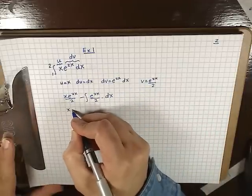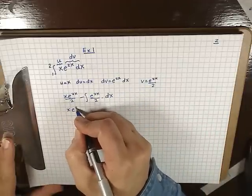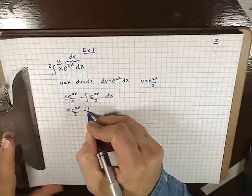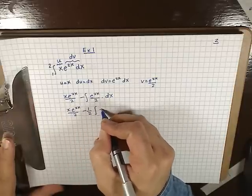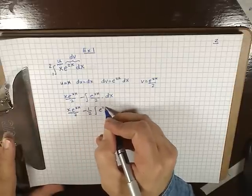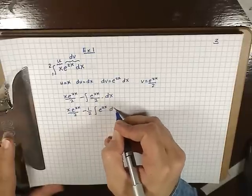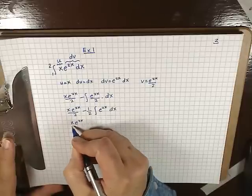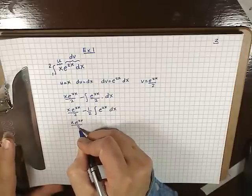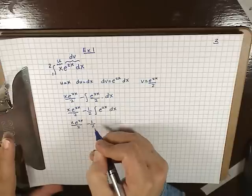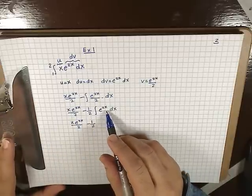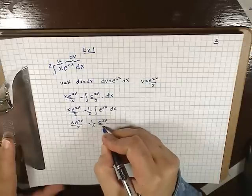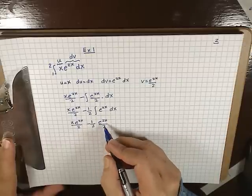So we get x e^(2x) over 2, pulling out the one half gives minus one half times the integral of e^(2x) dx. We get x e^(2x) over 2 minus one half times e^(2x) over 2. We divide by 2 because of the chain rule.